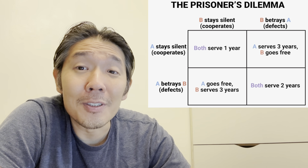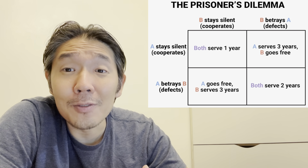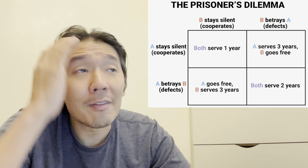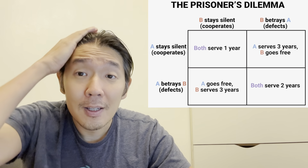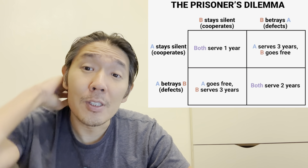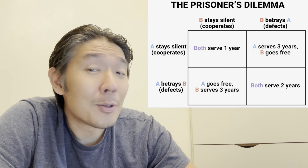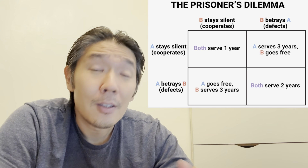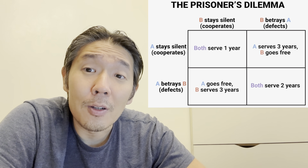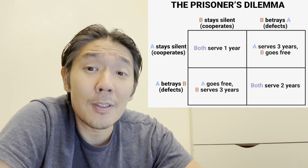What ends up happening is that a lot of people just snitch because they think that's what's best for them. If you navigate life with pure self-interest, that would seem like the most rational thing to do. But it turns out that cooperating and being loyal actually yields the better return of one year prison time.